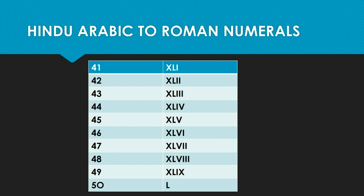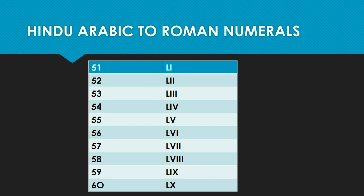Since 40 is XL, forty-one will be 40 plus 1, that is XL plus I, giving us XLI. Forty-two will be 40 plus 2 — XL is 40 and II is 2 — so it will be XLII. The same thing applies for all numbers up to 49, which is XL plus IX. You have to follow the same rule throughout.